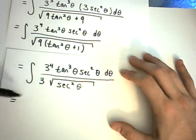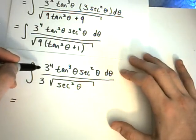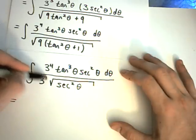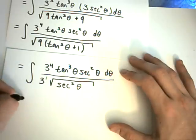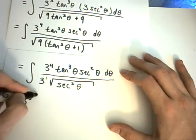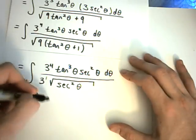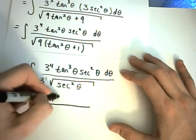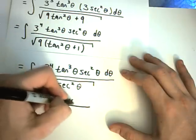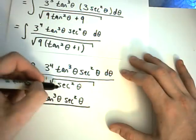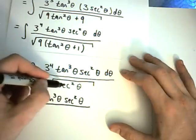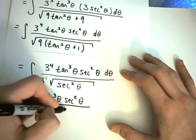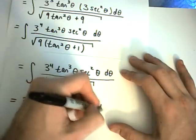Again, I'm not doing much on the top. 3 to the 4th, I've got tangent cubed of theta, secant squared theta, d theta. Now, on the bottom, this is where the simplification occurs. So, I can pull the 3 outside of the square root, I can pull the 9 outside of the square root as a 3. And then, underneath the radical, I can use this substitution again.